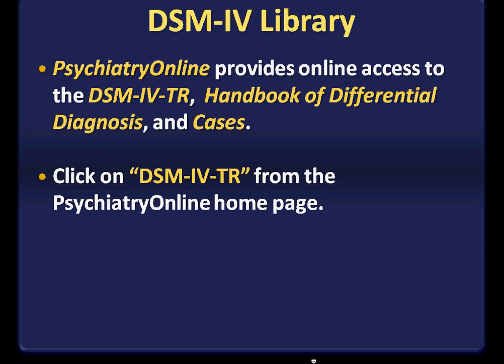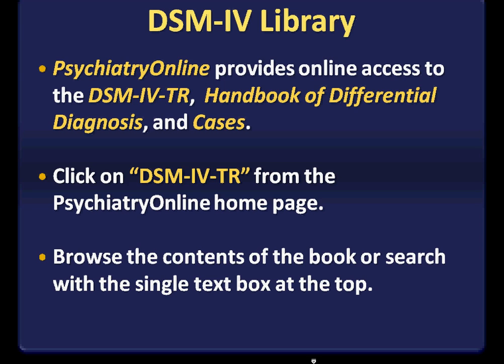From the library's homepage, you would start from the Psychology Databases by Subject, and then click on DSM-IV-TR from the Psychiatry Online homepage. Browse the contents of the book, or you can search with the single text box provided at the top of the screen. When you browse the contents, you'll be browsing by the disorder classification, and then finding the specific disorder within that category.